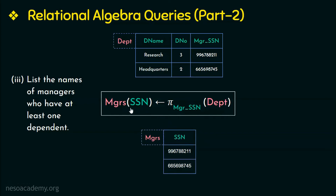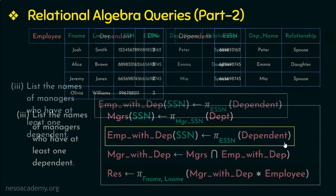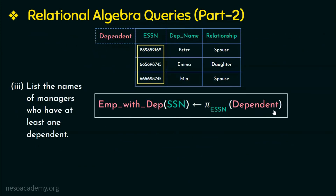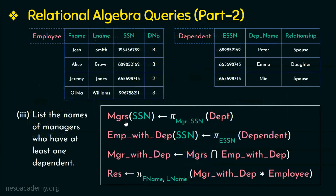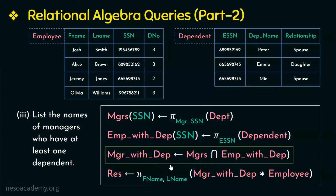Next we list the SSN of employees with dependents from the dependent relation, which is the second step. The SSN of all employees are projected from the dependent relation, with the attribute ESSN renamed as SSN, and stored in a relation. We now have one relation with SSNs of all managers and another with SSNs of employees having dependents. To find SSNs common to both relations — that is, managers who have dependents — we perform an intersection of the two relations, which is the third step.